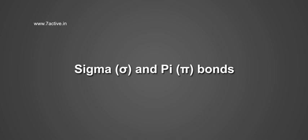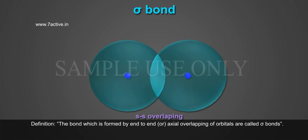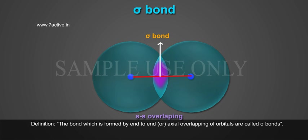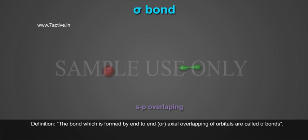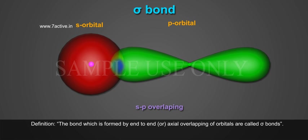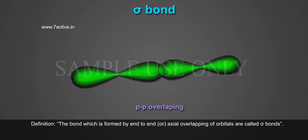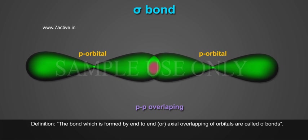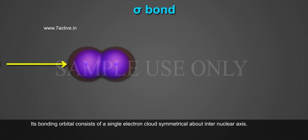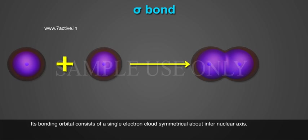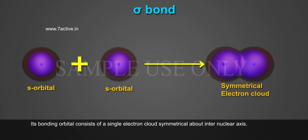Sigma and Pi Bonds. Sigma Bond Definition: The bond which is formed by end-to-end or axial overlapping of orbitals are called Sigma bonds. Its bonding orbital consists of a single electron cloud symmetrical about the inter-nuclear axis.